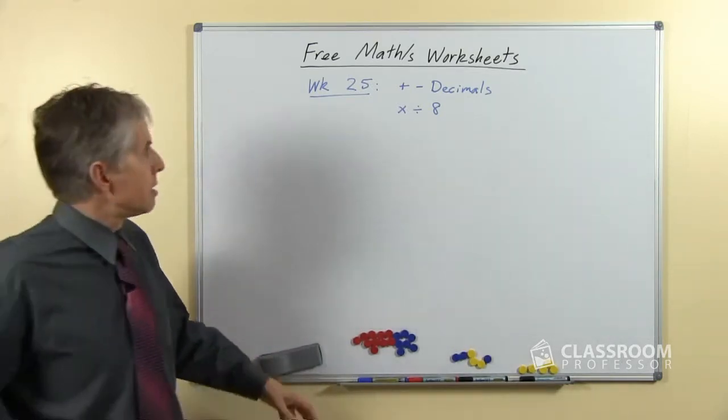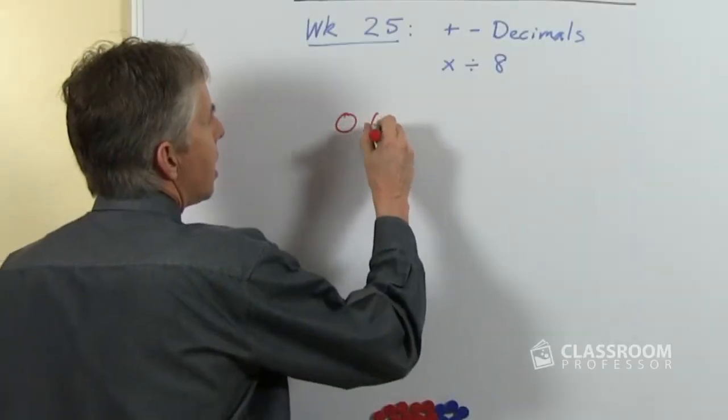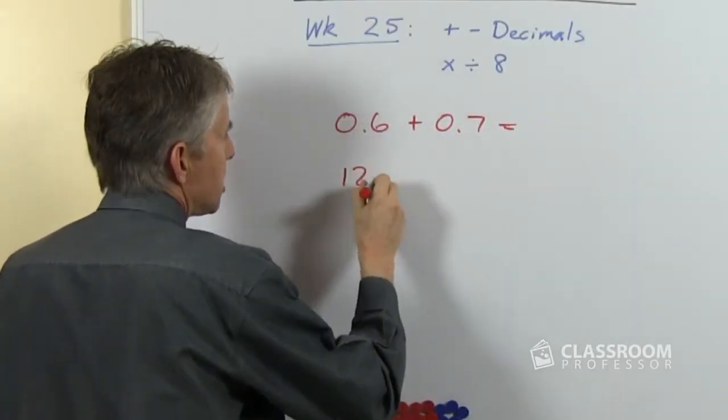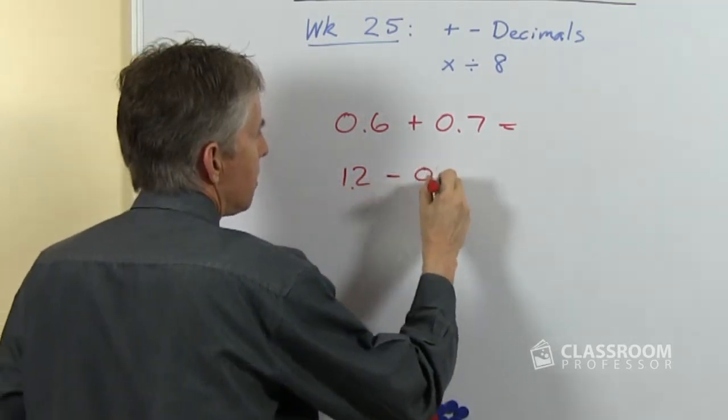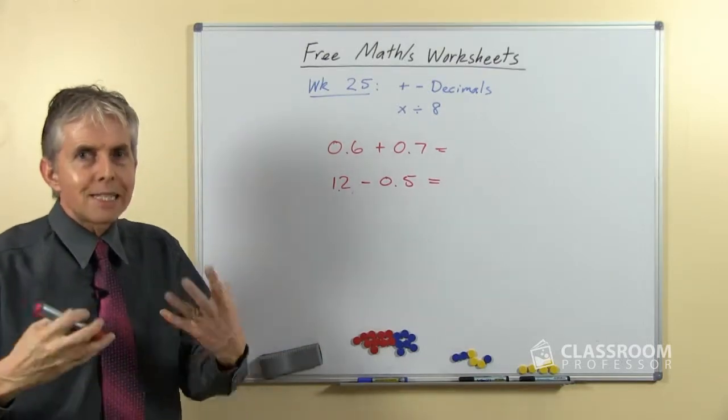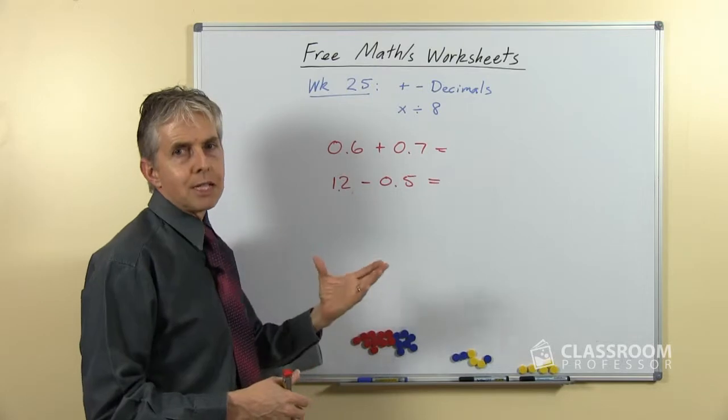So we're going to start with adding and subtracting decimals. These will be questions like 0.6 plus 0.7 or a better way of reading it is 6 tenths plus 7 tenths equals.